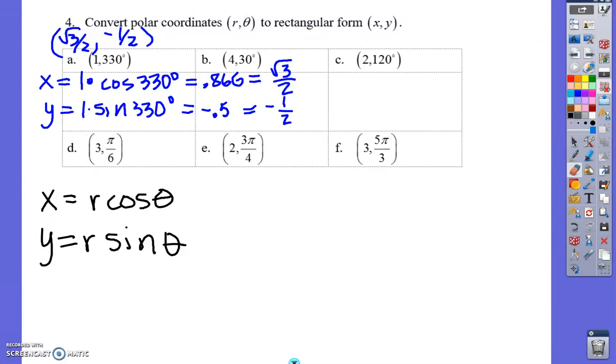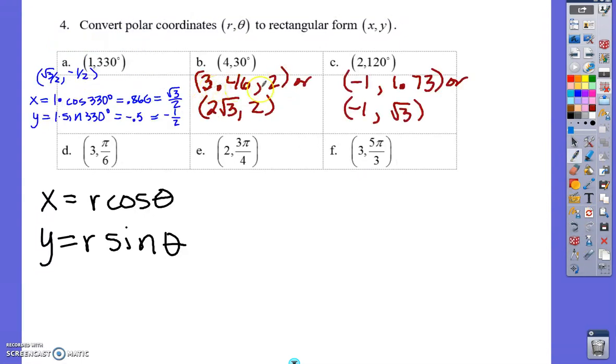My calculator popped out these approximate decimal answers for B of 3.46, 2 and for C of negative 1, 1.732. Now both of these angles, this is 30 degrees, this one's based off 60 actually. And so if this was a 1, like this was back here, I'd have the square root of 3 and 1/2.